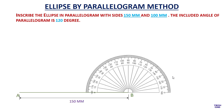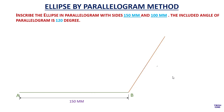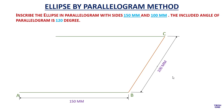Now take a protractor and make a line of 100 mm at 120 degrees and name that point C. Complete your parallelogram by making a parallel line to AB and a parallel line to BC, and name it as point D.